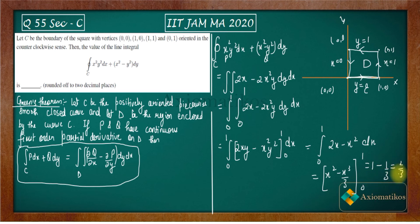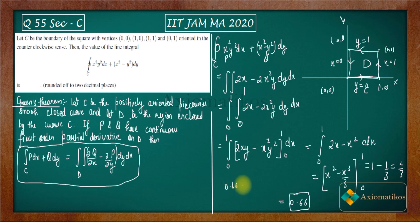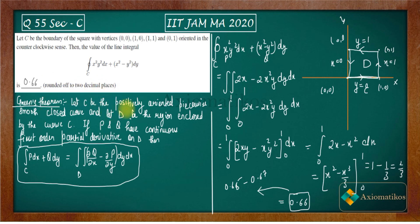So 2/3 is equal to 0.66. In the exam, the accepted range was between 0.665 and 0.67, and our value lies within that range. So the answer is 0.66, which is considered the correct answer for this question.